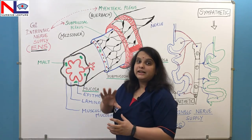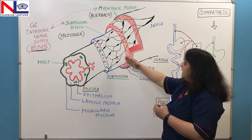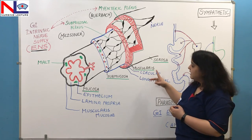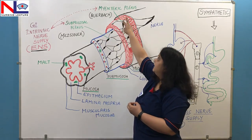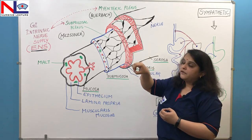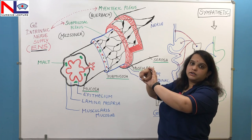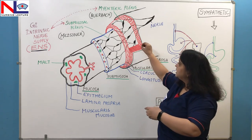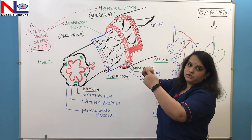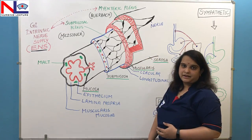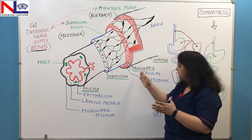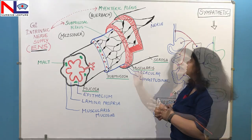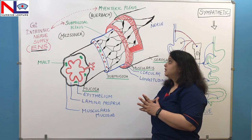After the submucosa, the next layer is the muscularis. It has two muscle layers: the inner one is circular muscle fibers and the outer one is longitudinal muscle fibers. Circular fibers run along the circumference of the tract and longitudinal fibers run along its length. There are some exceptions — in the stomach, there is one additional oblique layer, which we will discuss when we deal with the stomach.